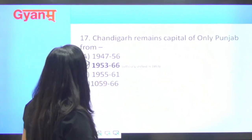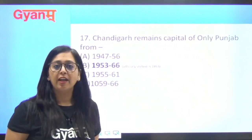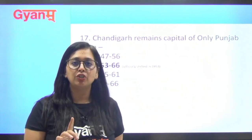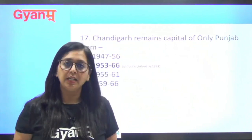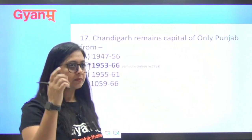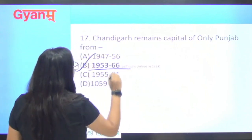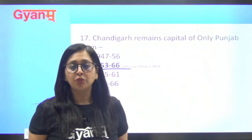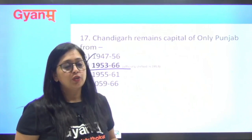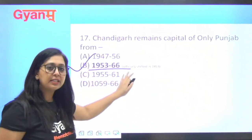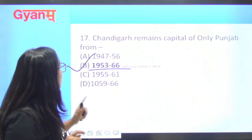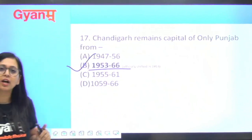Next question: Chandigarh remains the capital of only Punjab from which period? Chandigarh is currently the capital of both Punjab and Haryana. But there was a time when it was only Punjab's capital — when Haryana did not yet exist. Approximately announced in 1952, the capital officially shifted in 1953. So from 1953 to 1966, Chandigarh was only Punjab's capital.